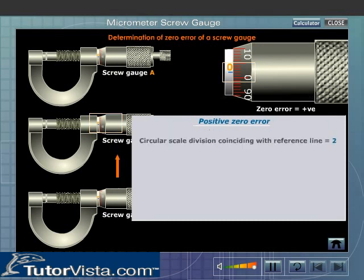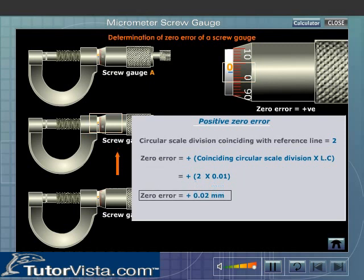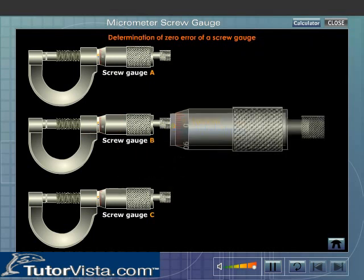Note the division of the circular scale that coincides with the reference line. The zero error is obtained by multiplying the coinciding circular or head scale division by the least count of the screw gauge.